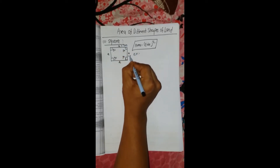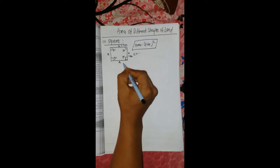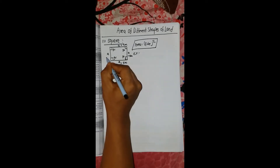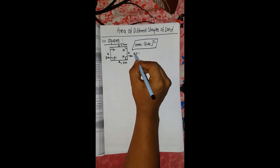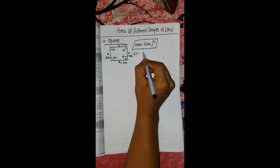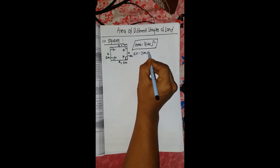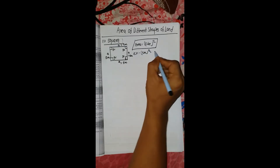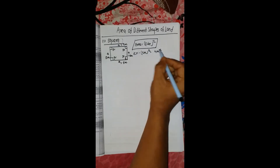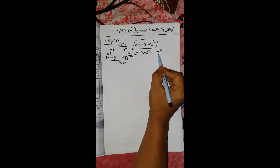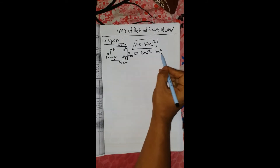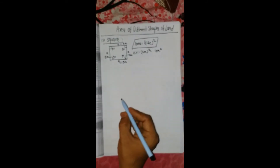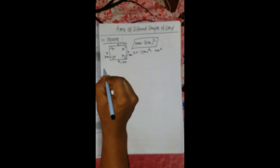For example, if the side is 2 meters, then area is equal to 2 squared, which gives 4 square meters. Now let's look at a rectangle.